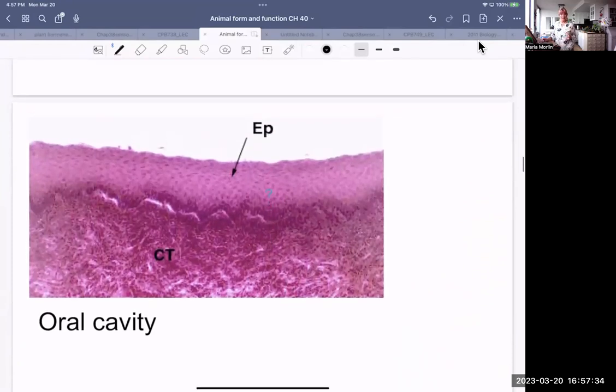This is the oral cavity. So the inside of your mouth. This is connective tissue. And this is epithelial tissue. Also stratified because you're replacing that tissue all the time, the epithelial tissue.